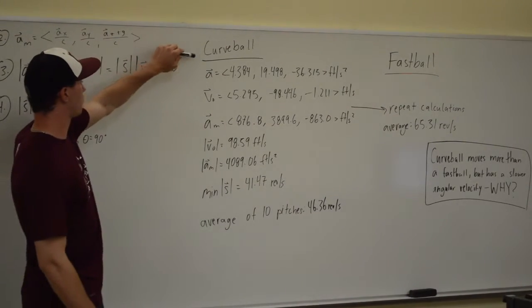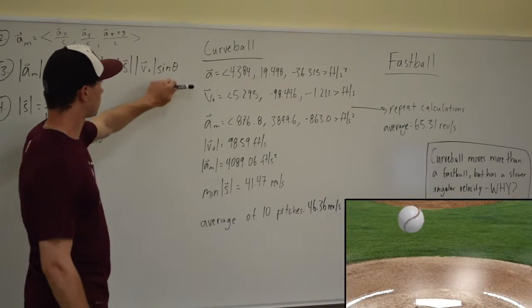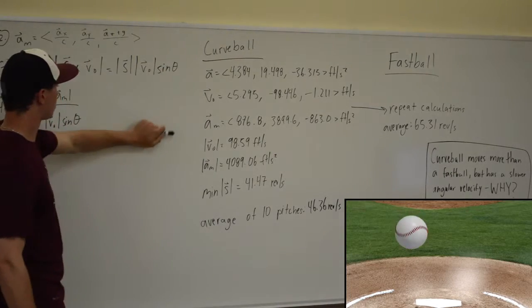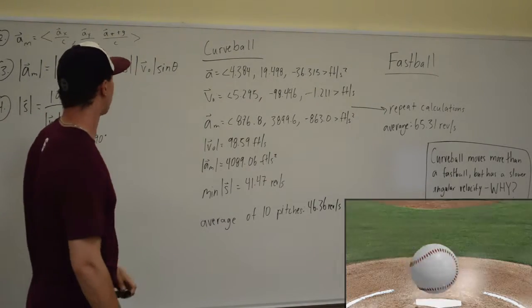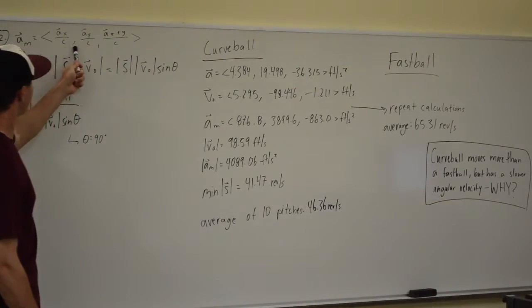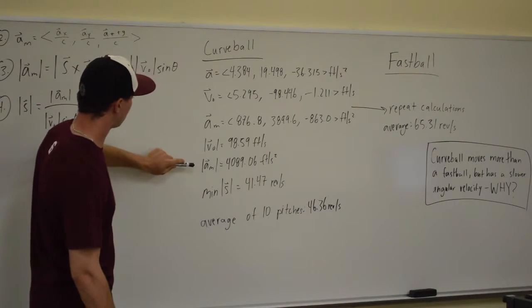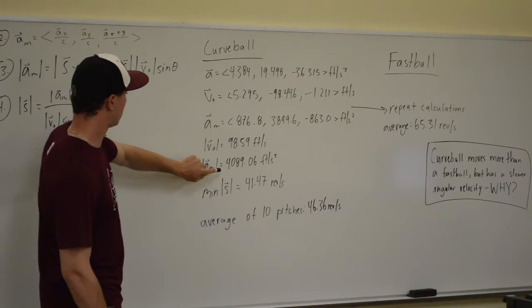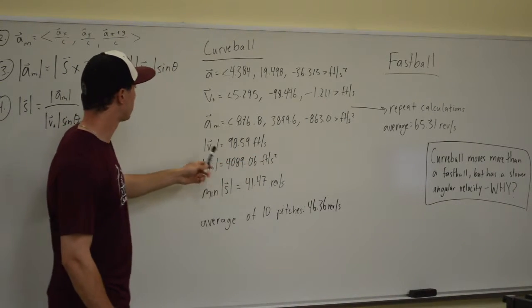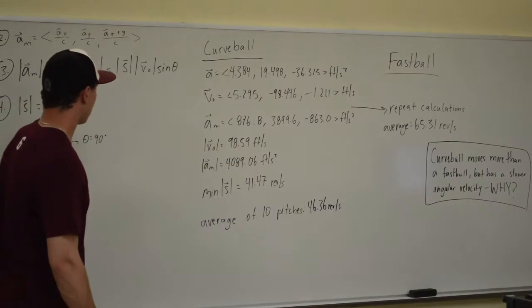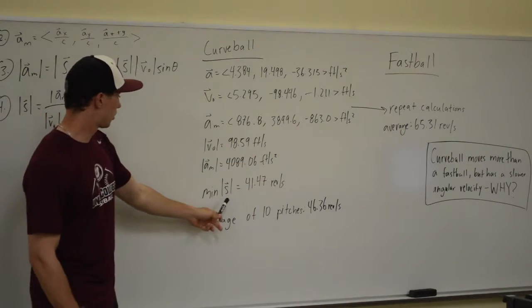In analyzing the spin of a curveball, we started off with taking the acceleration and initial velocity of the pitch, and we solved for the modified acceleration by dividing each of the components by c. And we took the magnitude of that, which is this value here.